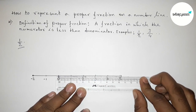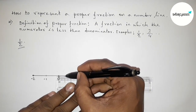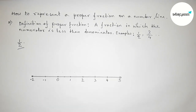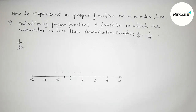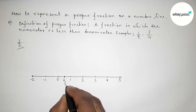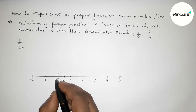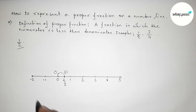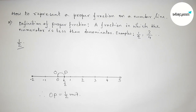The length between 0 and 1 equals 2 centimeters, so the half will be 1 centimeter. Finding the half between 0 and 1 and marking it — this point is 1 by 2 on the number line. Taking points O and P, we can write the length OP equals 1 by 2 unit. By this way you can represent a proper fraction on a number line. Thanks for watching — please share it with your friends.